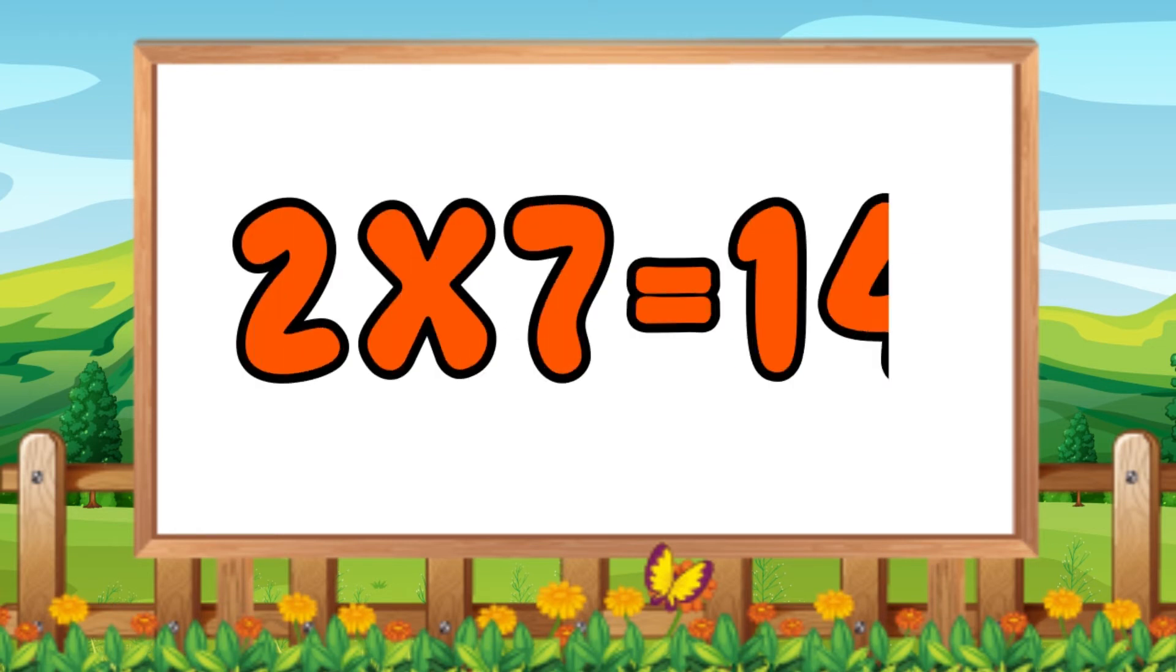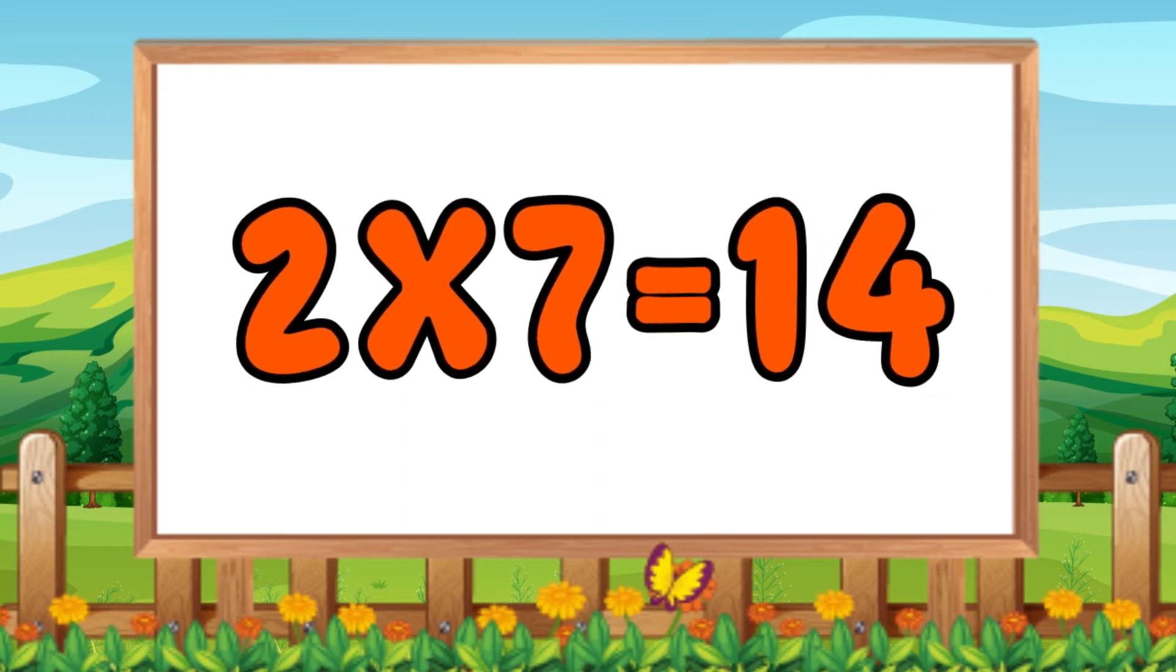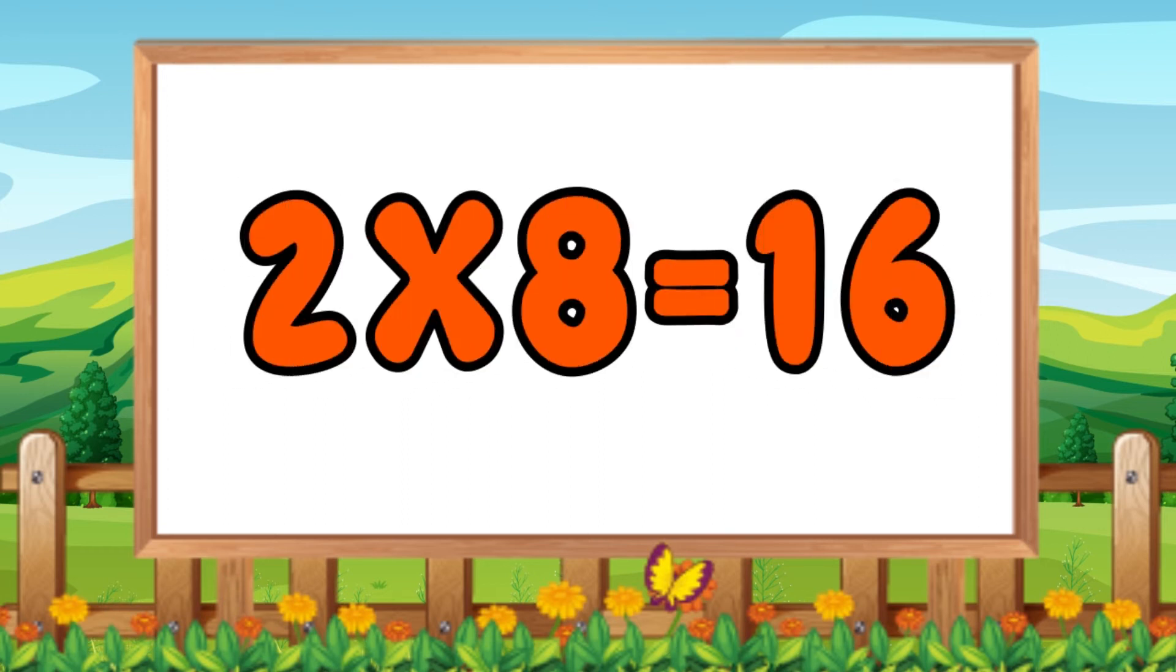Two sevens are fourteen, two sevens are fourteen. Two eights are sixteen.